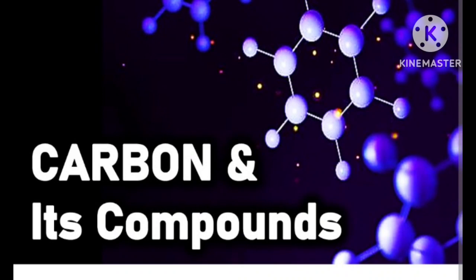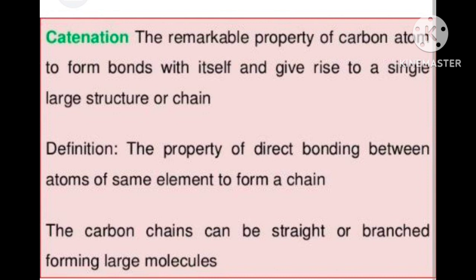Before discussing catenation, I would like to tell you that the atomic number of carbon is 6 and its electronic configuration is 2 comma 4. It needs 4 electrons, which means that carbon always shares 4 electrons. It shows tetravalency. This is the first versatile nature of carbon. Another versatile nature of carbon is catenation.